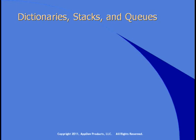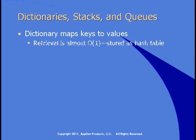In addition to the list class, the System.Collections.Generic namespace provides a number of other useful classes. For example, the dictionary class maps keys to values, and retrieval in this class is almost O(1), which means if you increase the size of the dictionary, retrieval time doesn't go up with the size. The dictionary is stored internally as a hash table, which indicates that retrieval is very fast.